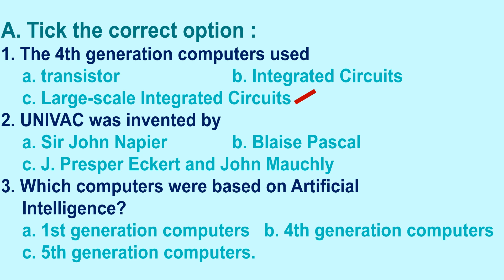Second question: UNIVAC was invented by — Option A: Sir John Napier, Option B: Blaise Pascal, Option C: J. Presper Eckert and John Moeckley. And the right option is Option C: J. Presper Eckert and John Moeckley.